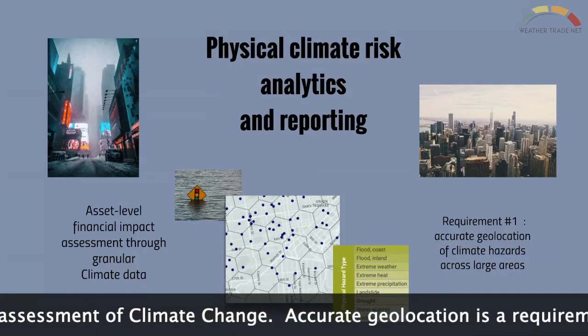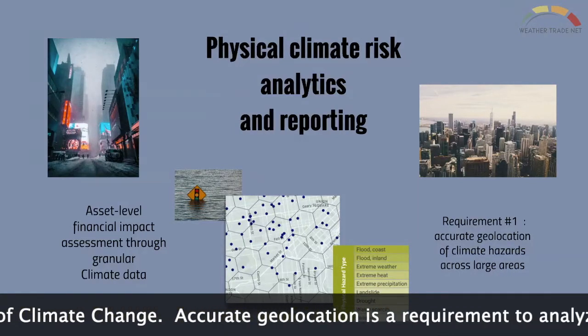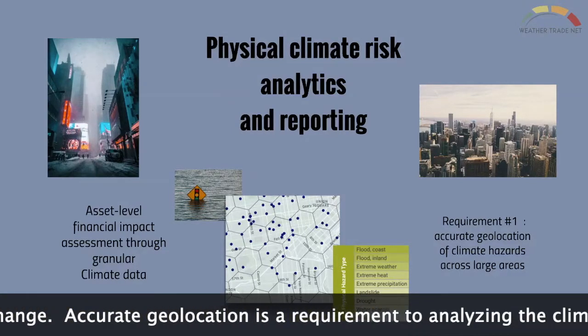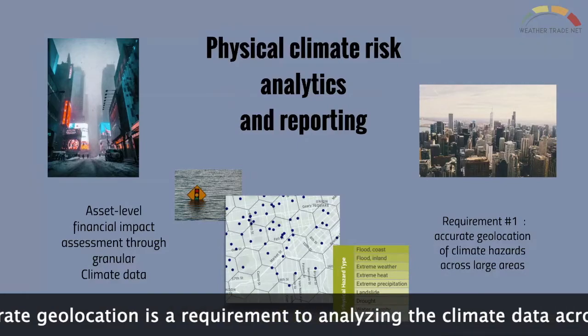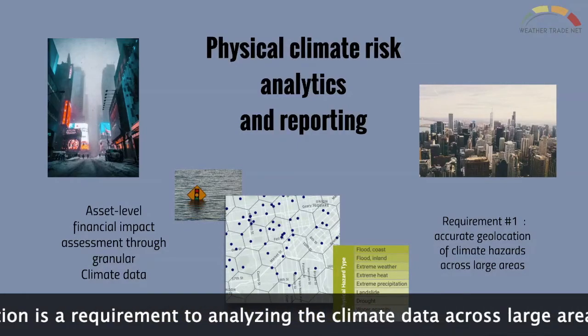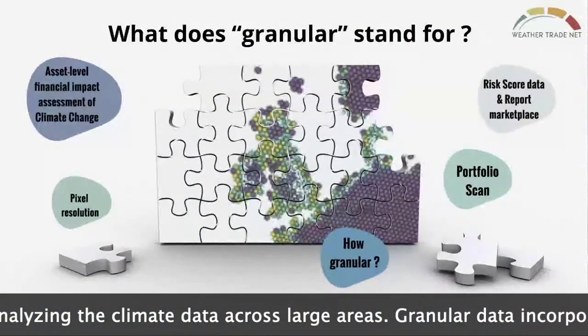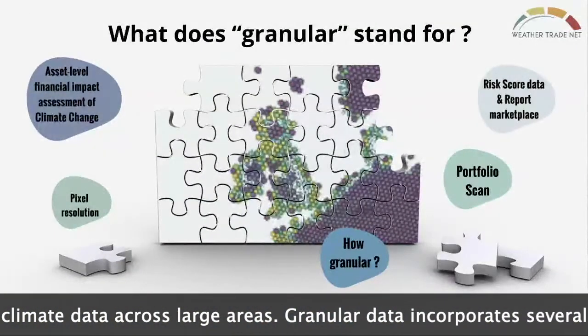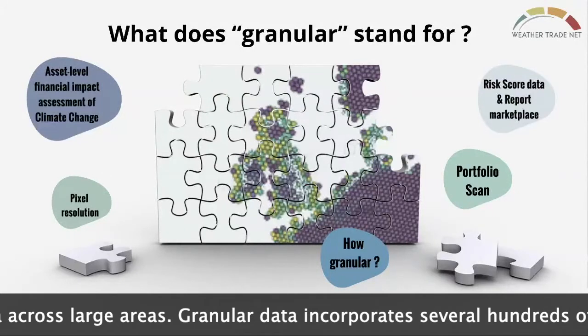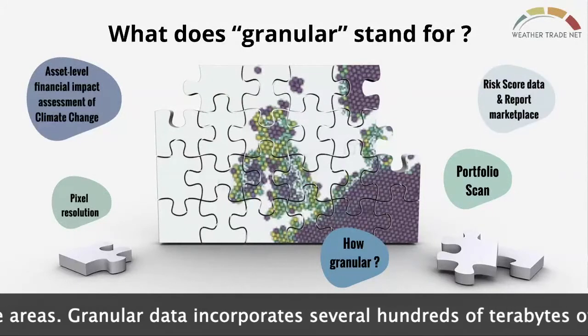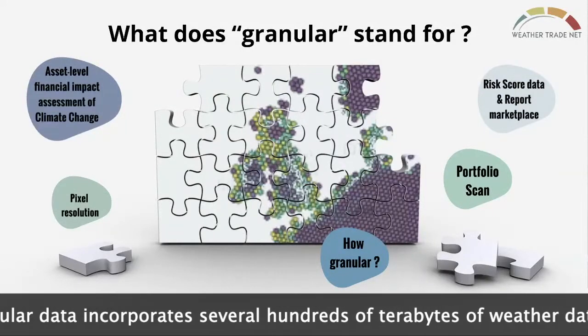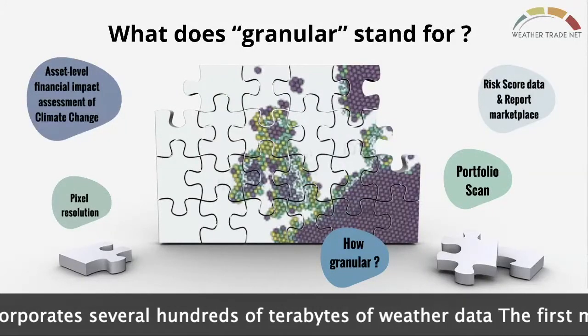Accurate geolocation is a requirement for analyzing the climate data across large areas. Granular data incorporates several hundreds of terabytes of weather data.